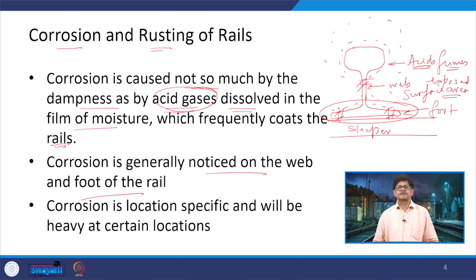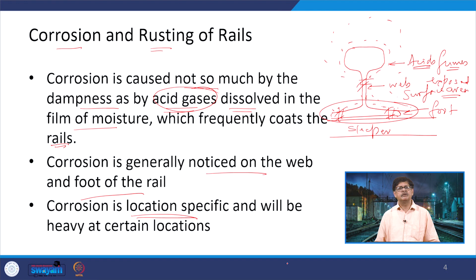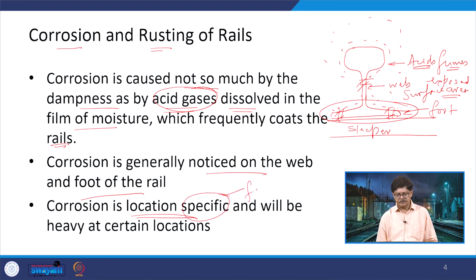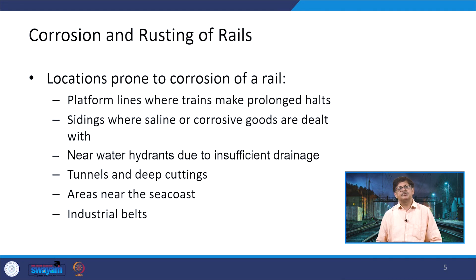Corrosion is location-specific and can be heavy at certain locations. The same rail section with the same mineral composition, placed on similar sleepers with fastenings, may not corrode at one location but may corrode at another. We need to identify what specific factors are causing corrosion at that particular location.